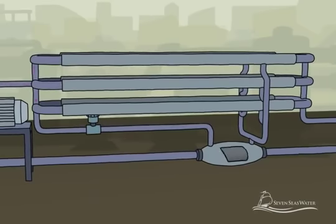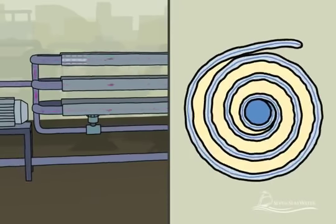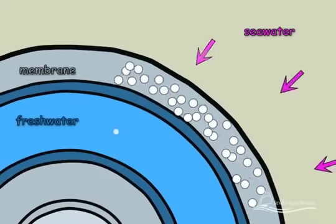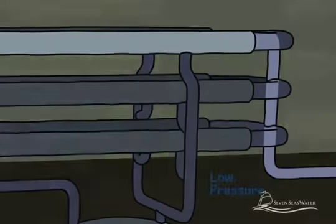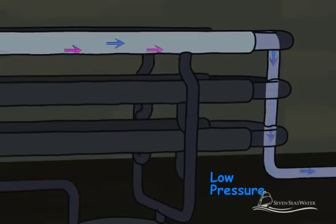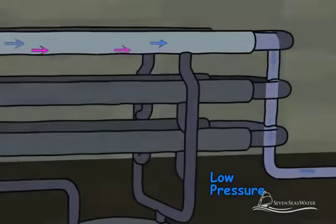As the pressurized seawater enters the pressure vessel and flows across the membrane surface, the water molecules are forced into and through the membrane envelopes, leaving the salt molecules behind. The desalted water passes through the membrane and emerges at low pressure where it is collected in a tube and directed to one end of the pressure vessel.